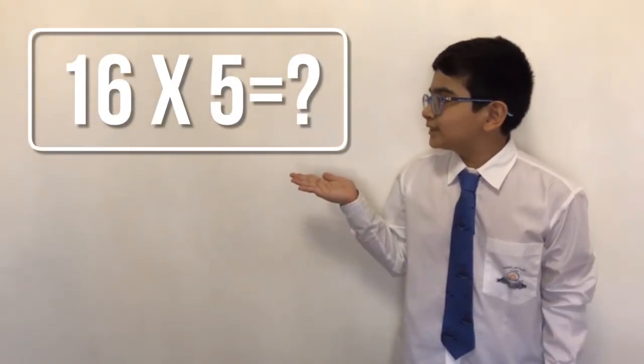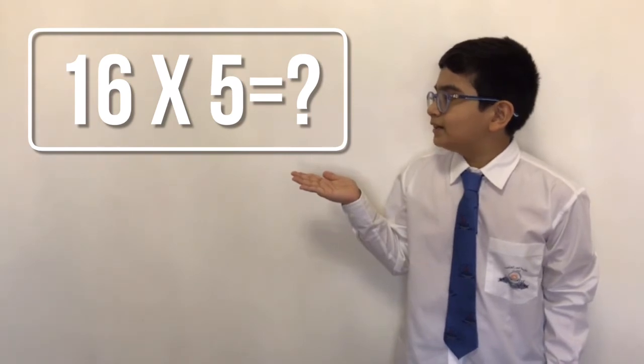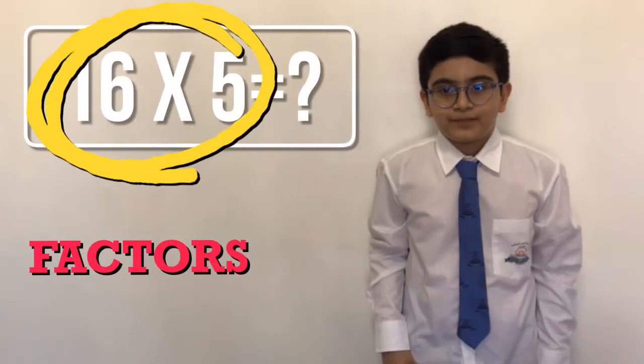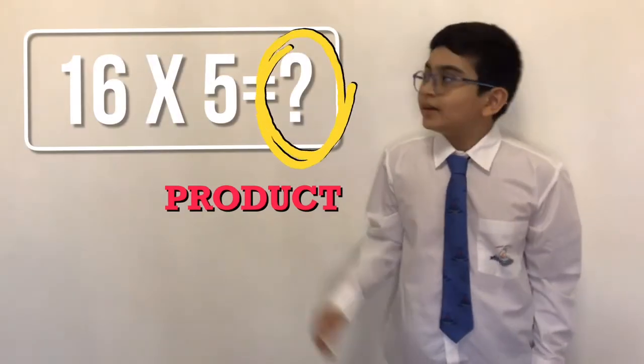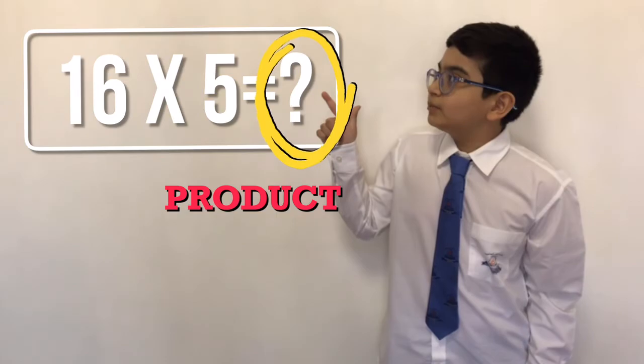Here we have an example of 16 multiply by 5. Number 16 and number 5 are the factors, and the answer will be the product.